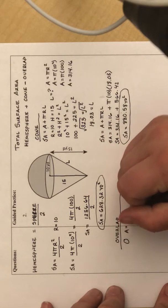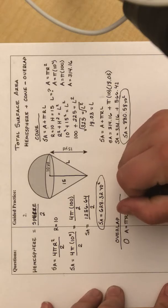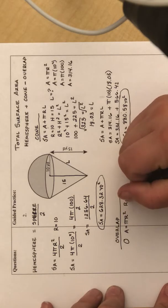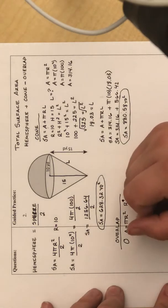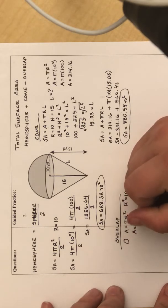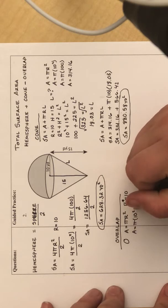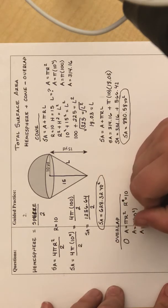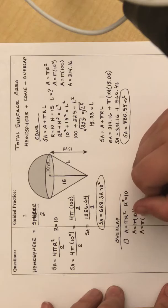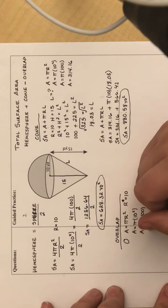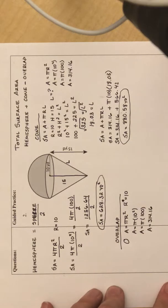And area of a circle is pi times radius squared. I know that the radius is 10. So the area is pi times 10 squared. So this is going to be the overlap.